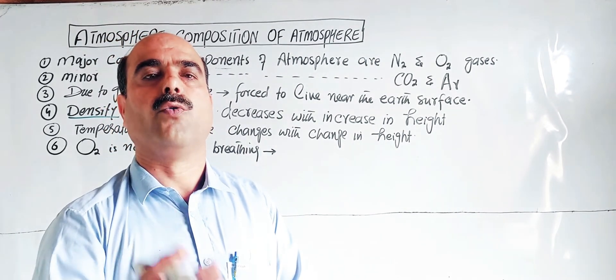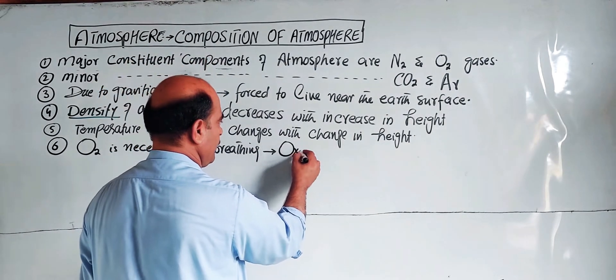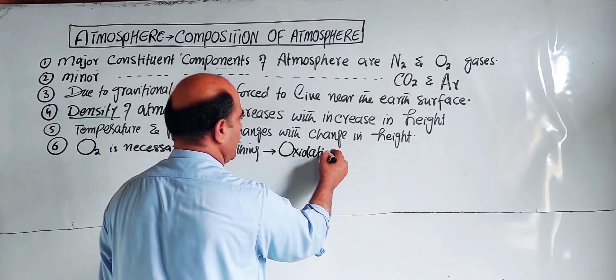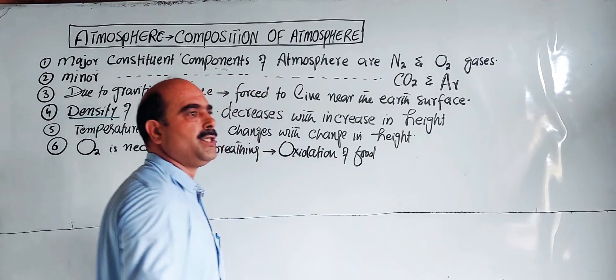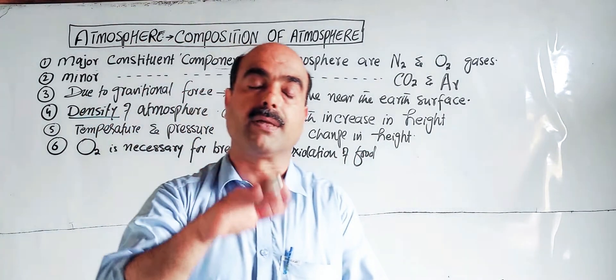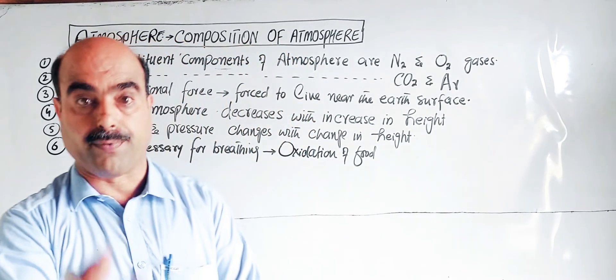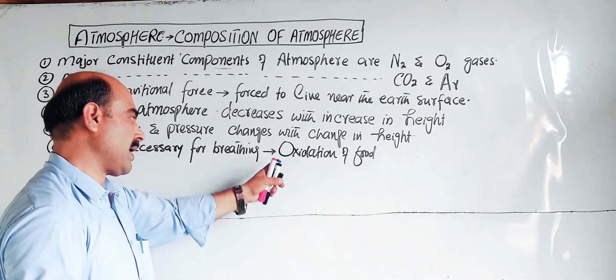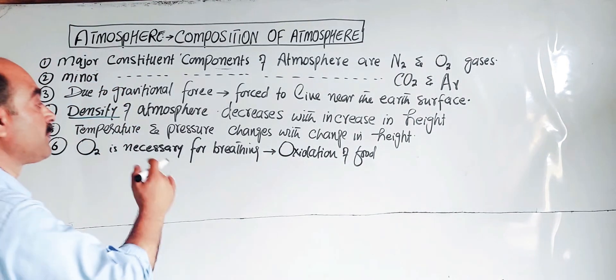This is called respiration. Through the oxidation of food, energy is released. This energy maintains body temperature at 37 degrees Celsius and increases the activity of body functions. That's why we use oxygen for respiration.